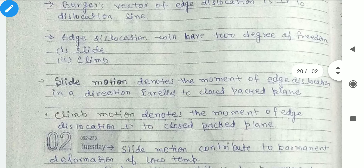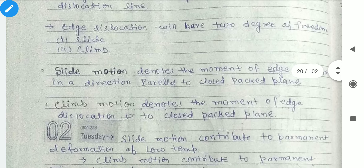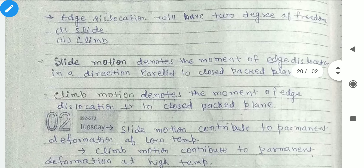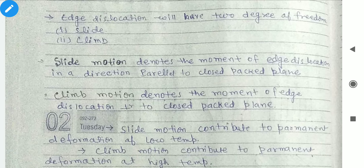In the slide motion of edge dislocation, there are two degrees of freedom. In slide motion, the movement of edge dislocation is in a direction parallel to the closed-packed plane — that is our slide dislocation. In climb motion, the movement of edge dislocation is perpendicular to the closed-packed plane.